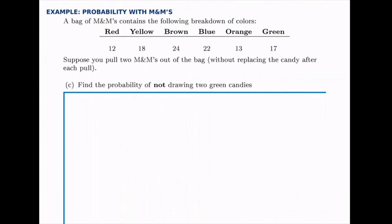For the next part we want the probability of not drawing two green candies. If you try to do this directly you'll find yourself getting lost very quickly, because the number of ways you could draw not two green candies gets out of hand — you could draw red then yellow, brown then orange, two browns, yellow and green, and there are just too many possibilities. It's much easier to first find the probability of drawing two green ones and then remember that the probability of that not happening is just one minus that answer. This looks just like the ones we've done previously.